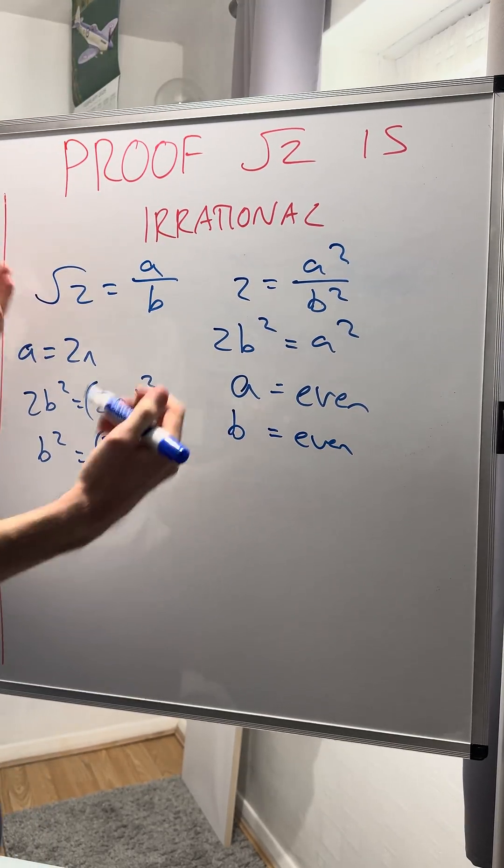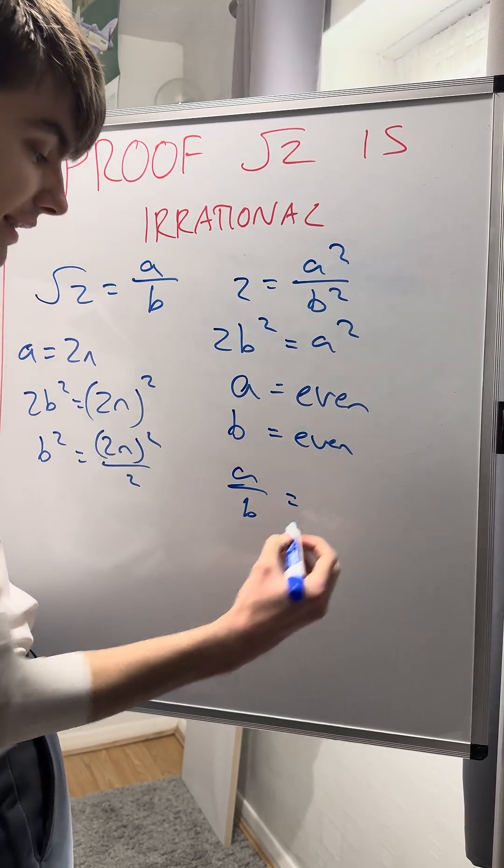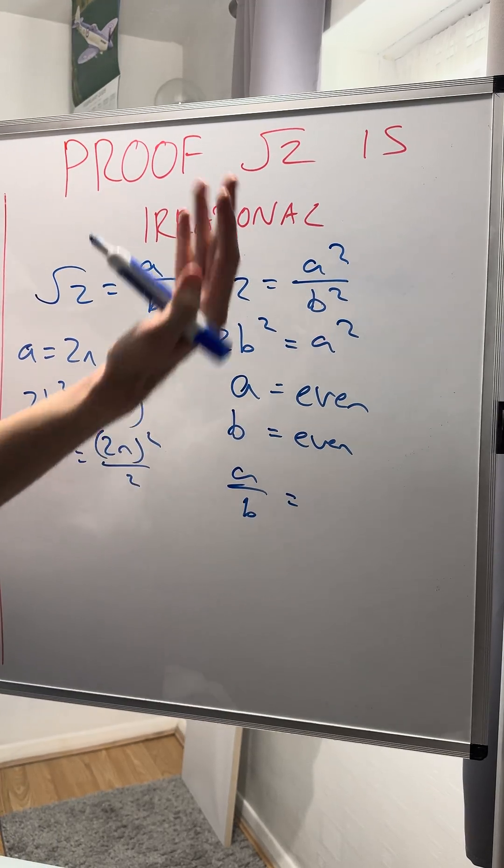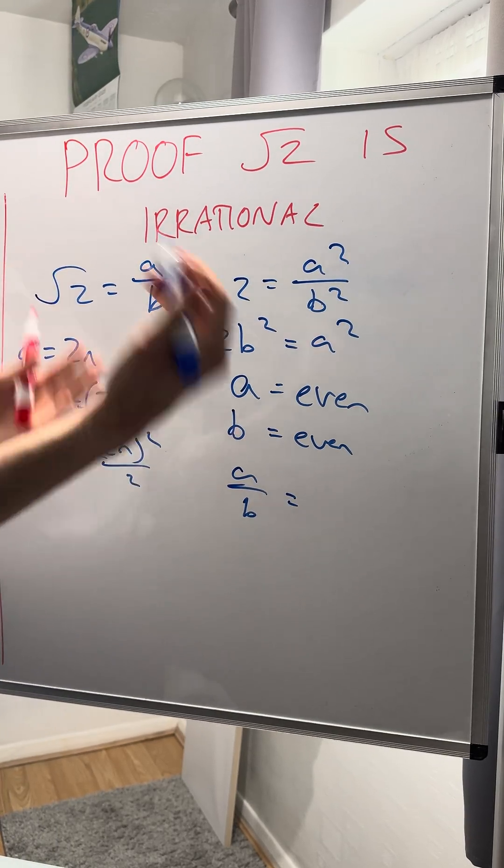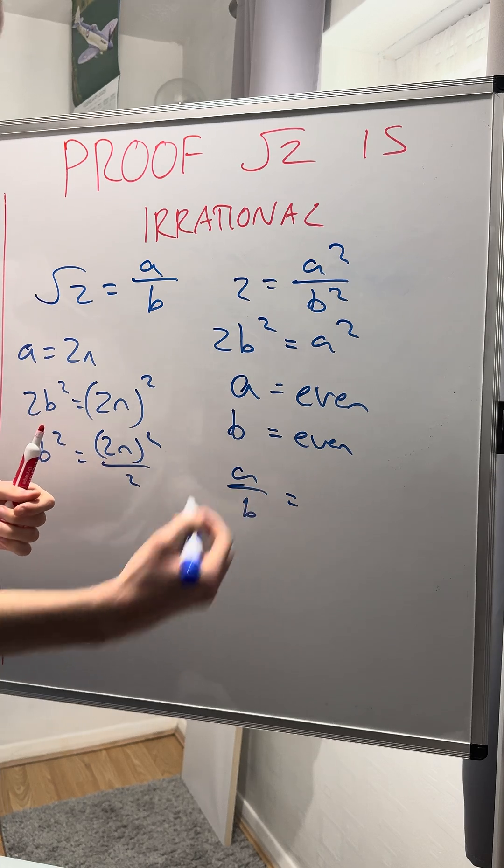Now, if a and b are both even, then a divided by b is a fraction that can be simplified. Why can it be simplified? Because they're both even—they both have a factor of 2. So I can pull out a factor of 2 from both of them and simplify this fraction.